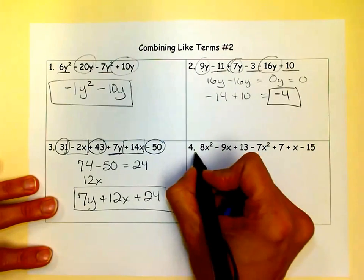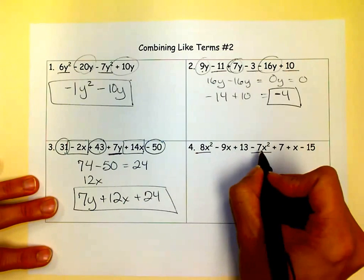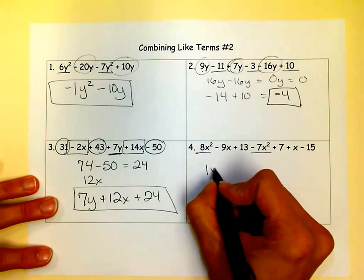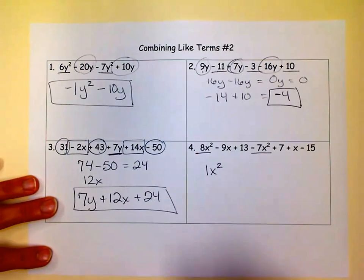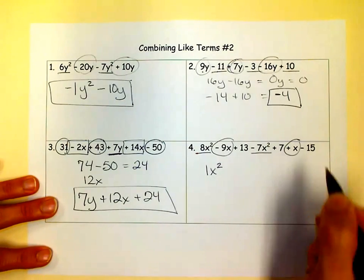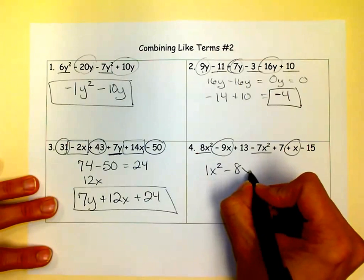On to the next one. We have an 8X squared and a negative 7X squared. Well, 8X squared minus 7X squared. 8 of something minus 7 of something is 1 of something. And our somethings are the X squareds. So we have an X squared there. And then we'll go with our X's next. Looks like those are the only X's. So a negative 9X plus X is a negative 8X.